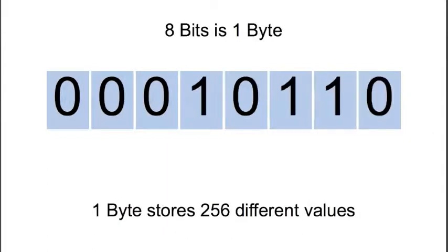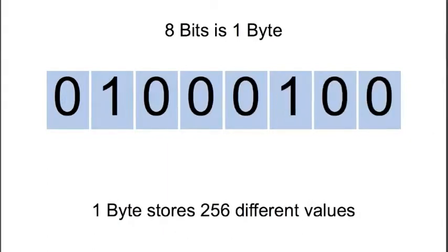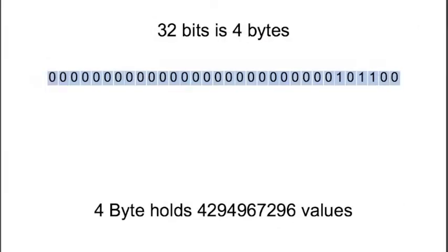If you have eight bits together, you have a byte, and a byte is 256 values. If you have 32 bits, that's equal to four bytes, and with that you can store over four billion values.